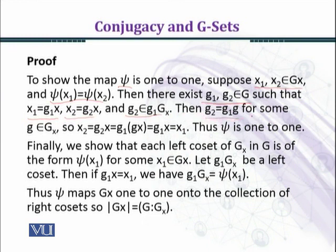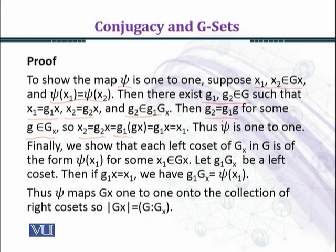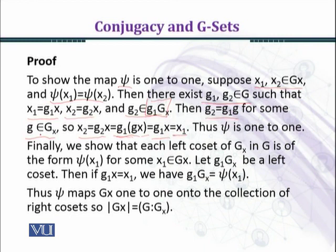This equals g₂·x which equals g₁·g·x for some g belonging to G_x. Since g₂ belongs to the left coset g₁·G_x, we can write g₂ = g₁·g for some g belonging to G_x. So g₂·x = g₁·(g·x), which equals g₁·x because g belongs to the stabilizer G_x, meaning g·x = x. Therefore g₂·x = g₁·x, which means x₂ = x₁. Thus psi is one-to-one.